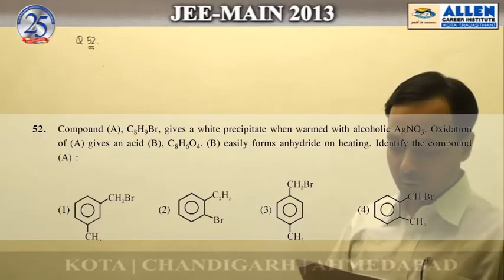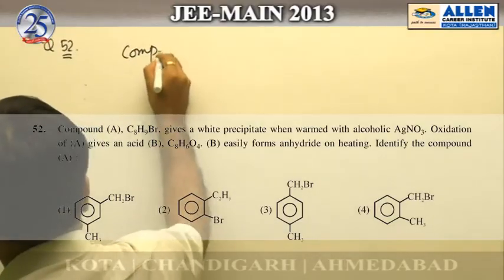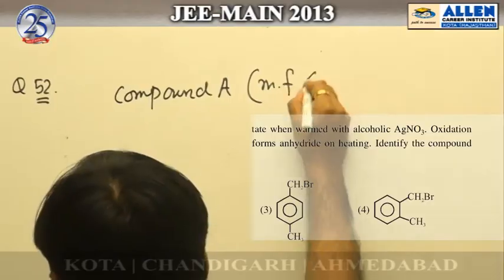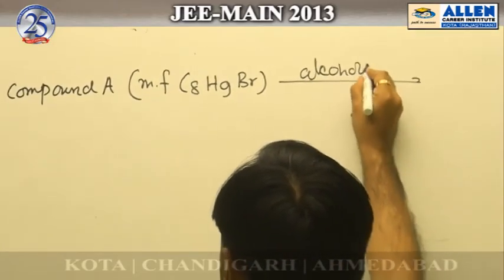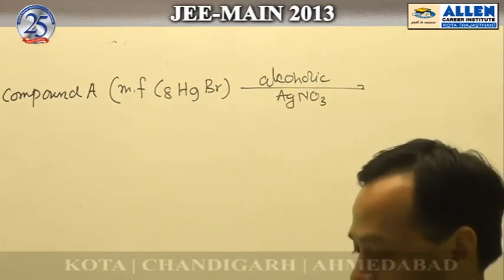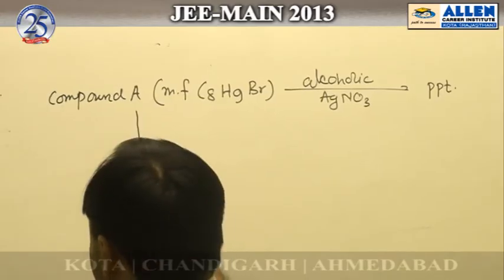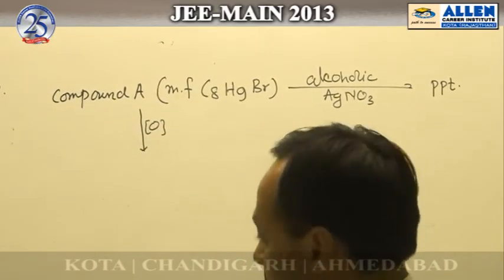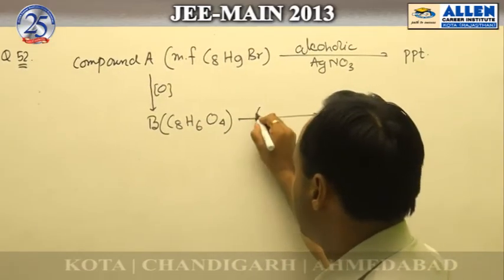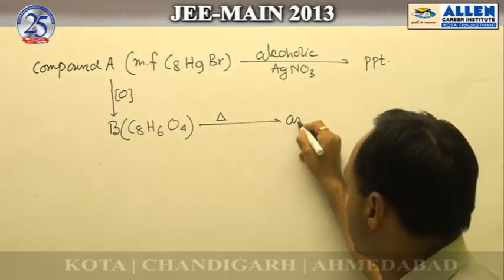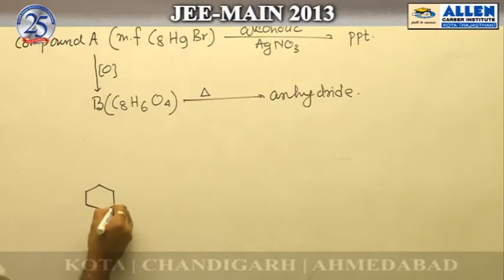Question 52: To explain this question, we first write a flow diagram. Compound A has molecular formula C8H9Br. When it reacts with alcoholic silver nitrate, it gets precipitated. Oxidation of A gives an acid B with molecular formula C8H6O4. And B on heating gives an anhydride. There are 4 compounds given as options.